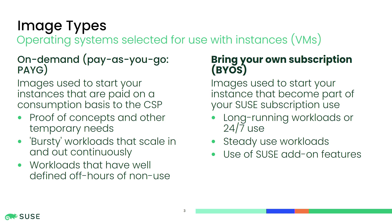If you have bring-your-own subscription, that means you use your existing registration keys that you have for SUSE Customer Center. You start an instance from one of those images and register it with SCC. You can also register it with the SUSE Update Infrastructure, which I'll talk about later in the presentation. On-demand images do not have a registration key for SCC, so you need to get updates in a different way — that's what the update infrastructure does in the public cloud. On-demand instances will register themselves automatically to the update infrastructure, so the minute you log in you have repositories and can run zypper up or install any packages that are in the repositories.